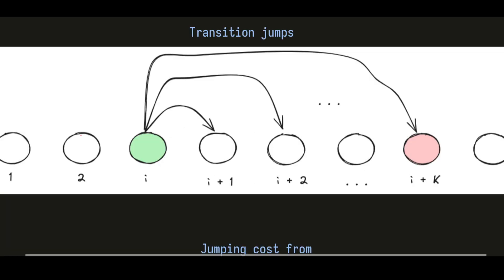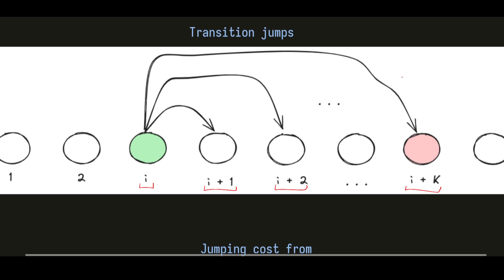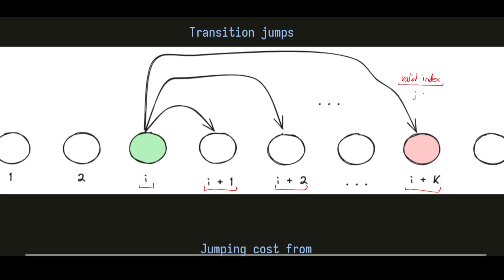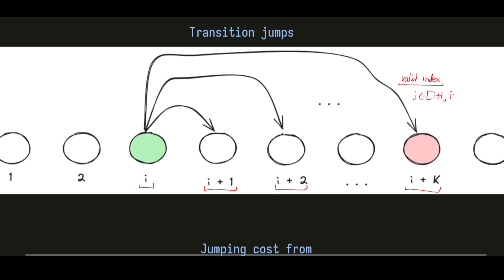Let's look at the transition jumps possible when the frog is at some intermediate position i. From there, it can jump to index i+1, i+2, all the way up to i+k, as long as they are valid indices. So the frog can jump to a valid index j in the range i+1 to i+k.